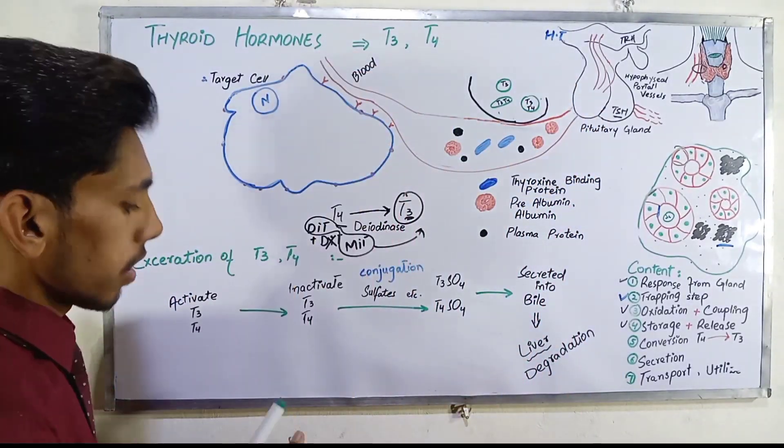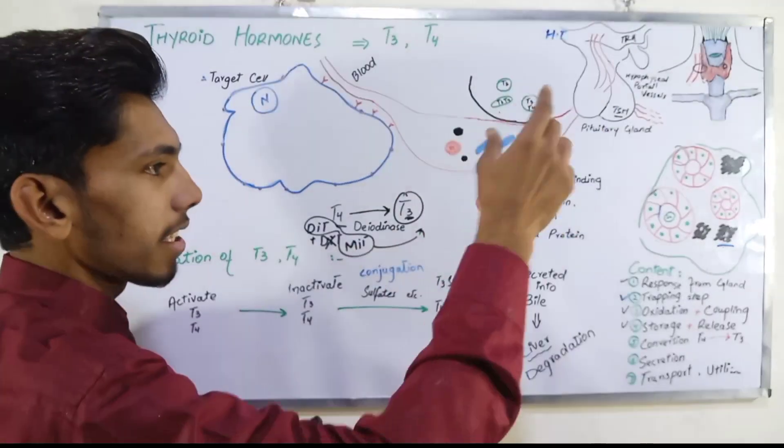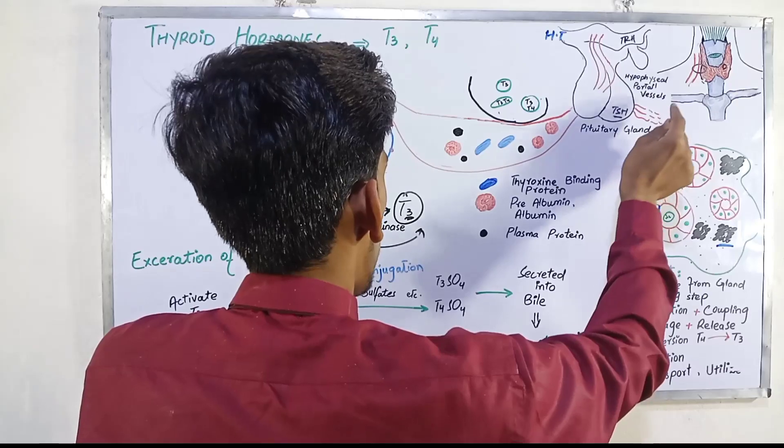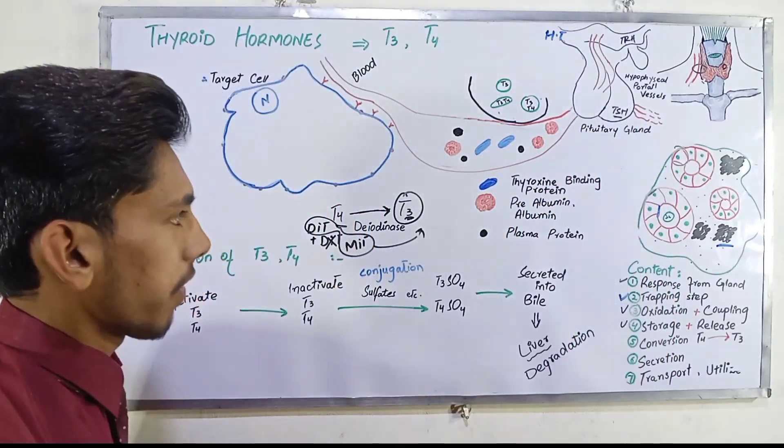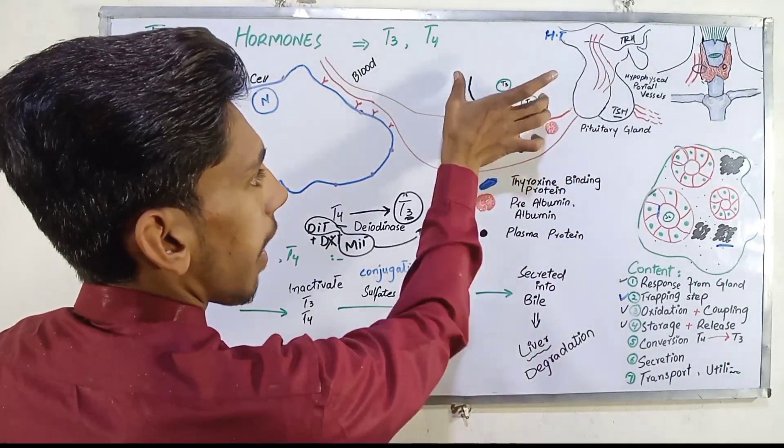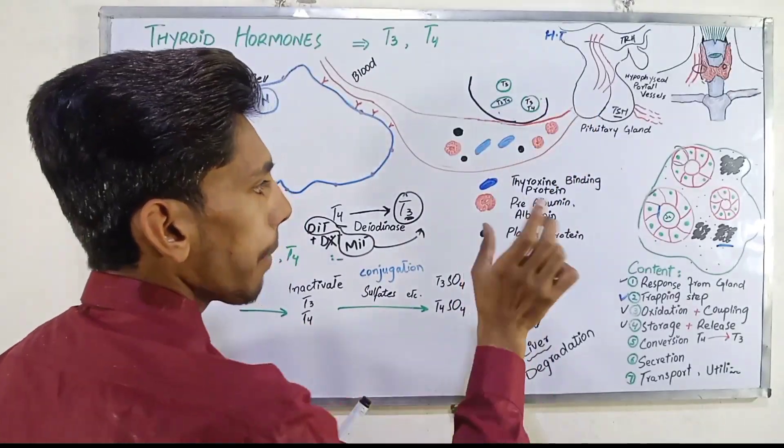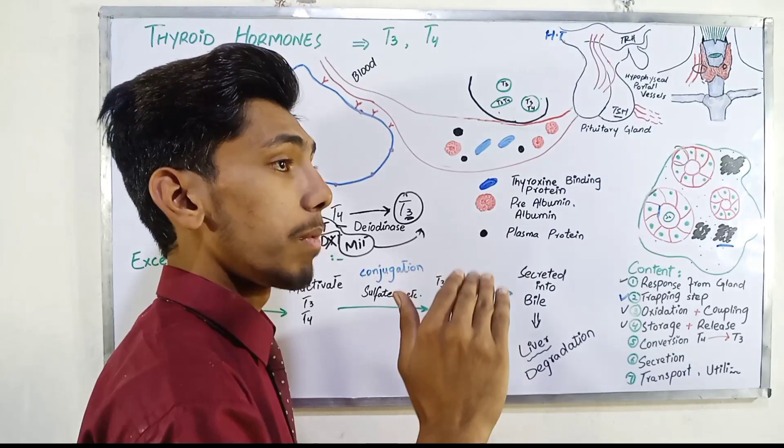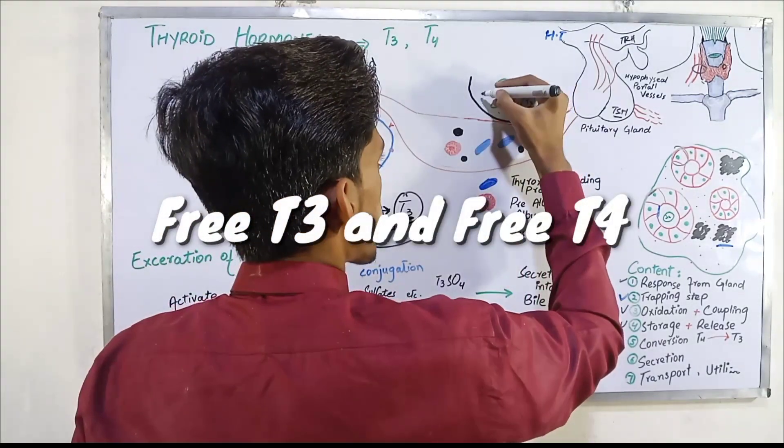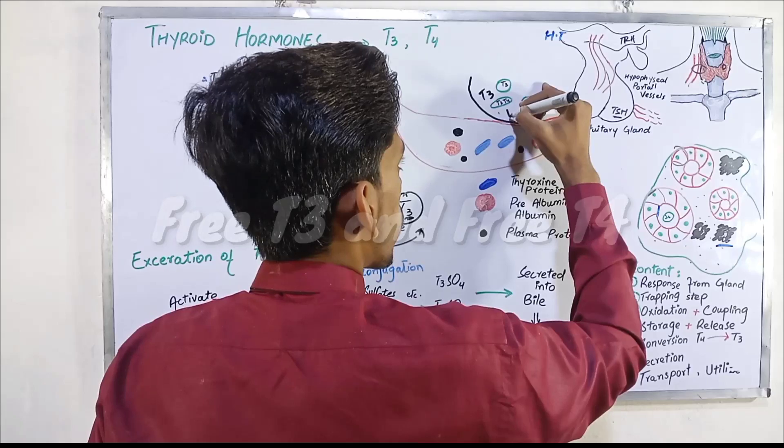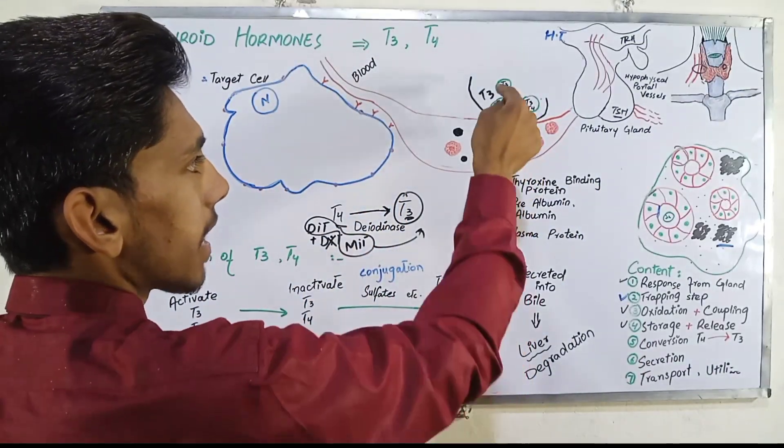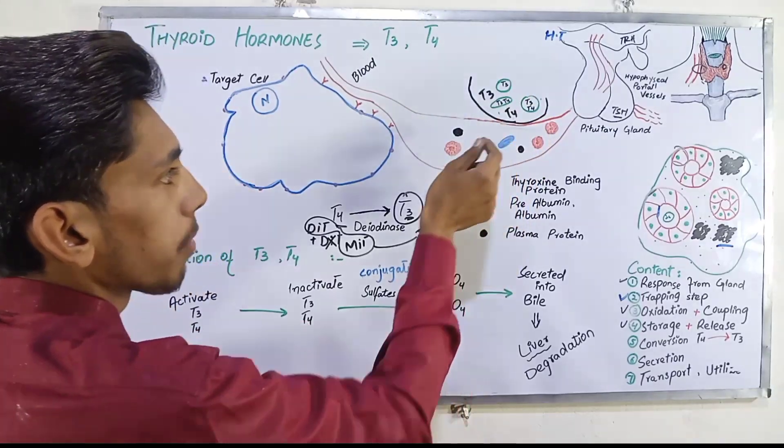Thyroid stimulating hormone acts on the thyroid gland. This is thyroid gland - T3 and T4 are released through lysosomal enzymes. Here you have the rest of the T3 and T4 in follicle cells.